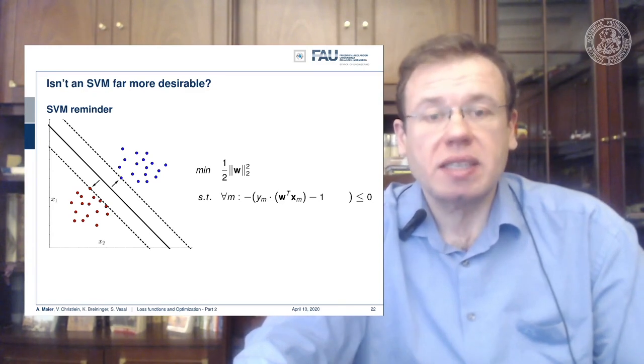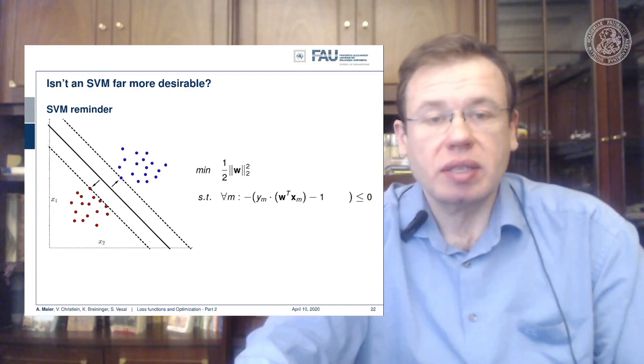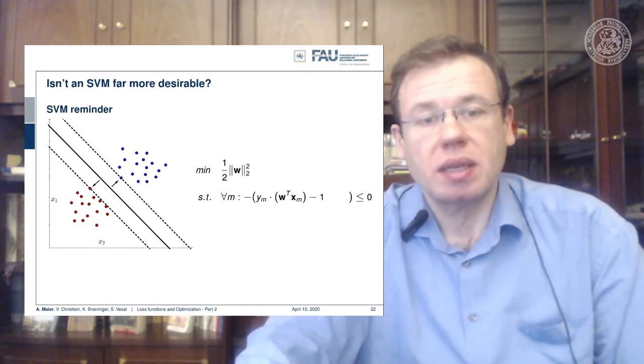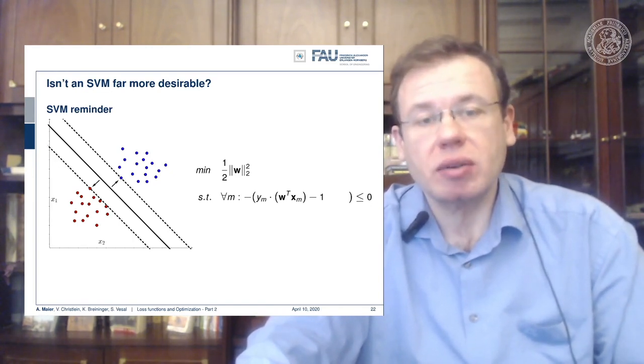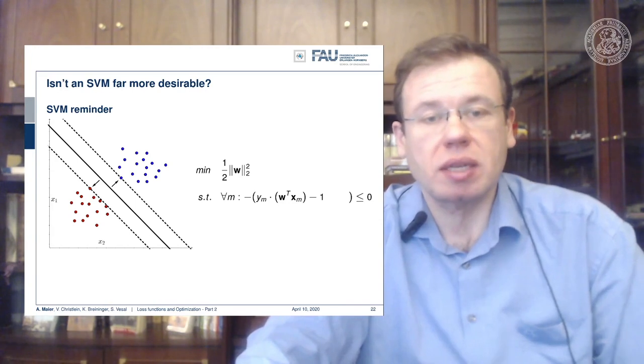So this means that if you increase the length of this normal vector, your distances get smaller. So if you want to maximize the distances, you minimize the length of the normal vector. Obviously, you could just collapse it to zero and then you would have essentially infinite distances.